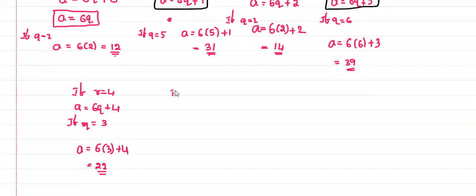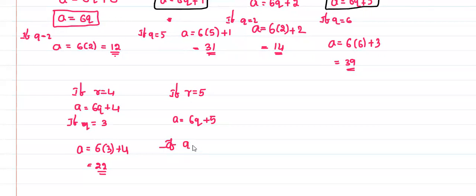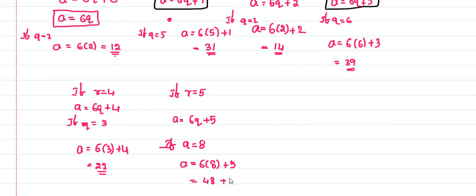If r is equal to 5, then a is equal to 6q plus 5. Taking q equals 8, a equals 6 into 8 plus 5, which is 48 plus 5 equals 53. This is an odd number of the form 6q plus 5.